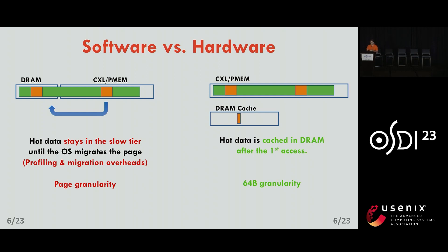When the tiers are handled in hardware, it's done transparently by the CPU, so data is cached in DRAM after the first access. There is also a difference in granularity: when managed in software, you can only move data at page granularity — 4 kilobytes at a time. In hardware, data is handled at the cache line granularity, so the DRAM cache works 64 bytes by 64 bytes.